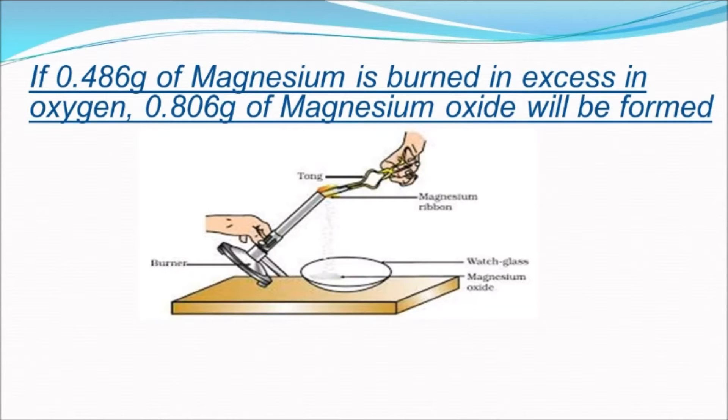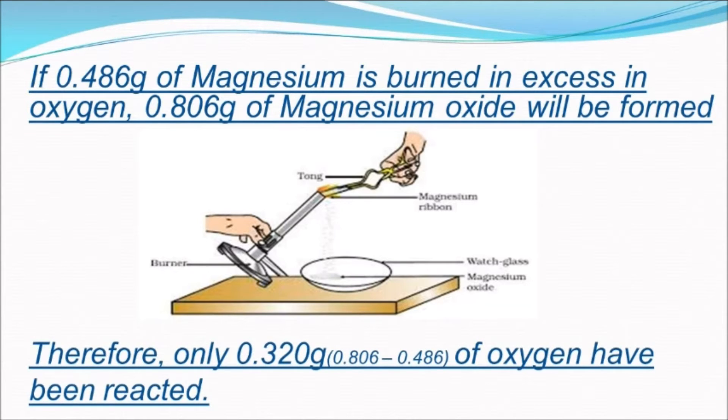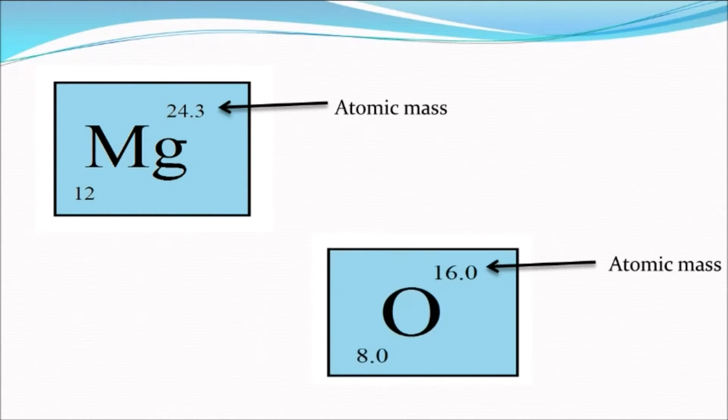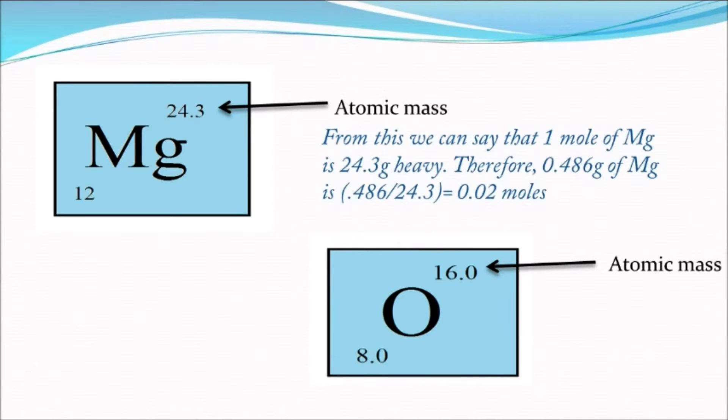This means that only 0.320 grams of oxygen have reacted. The atomic mass of magnesium is 24.3 and that of oxygen is 16. From this we can say that one mole of magnesium is 24.3 grams.